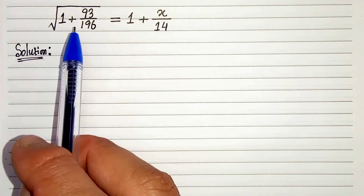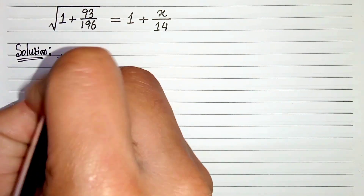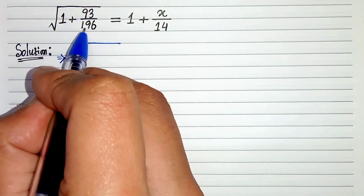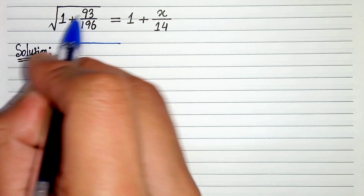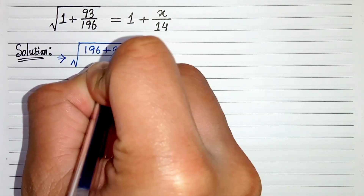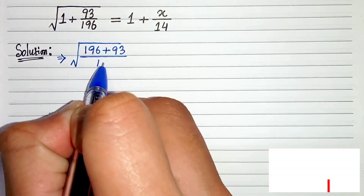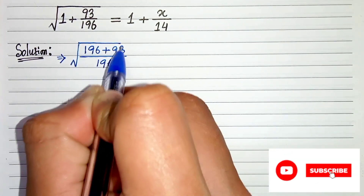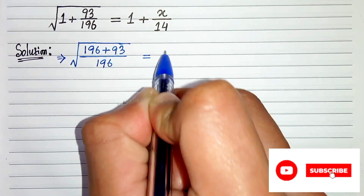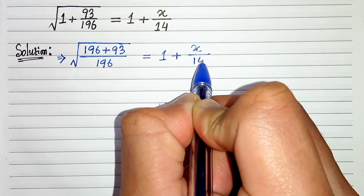First of all we will take the LCM. So we can write root under 196 plus 93 divided by 196 equals to 1 plus x by 14.